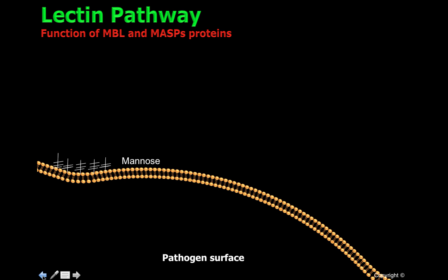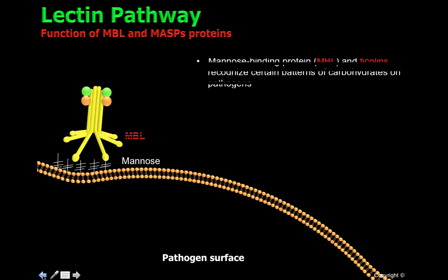The lectin pathway starts when MBL, or mannose-binding protein, and ficolins — which are not shown in this video — recognize certain patterns of carbohydrates on pathogens. Here, MBL is recognizing mannose patterns found in pathogens.